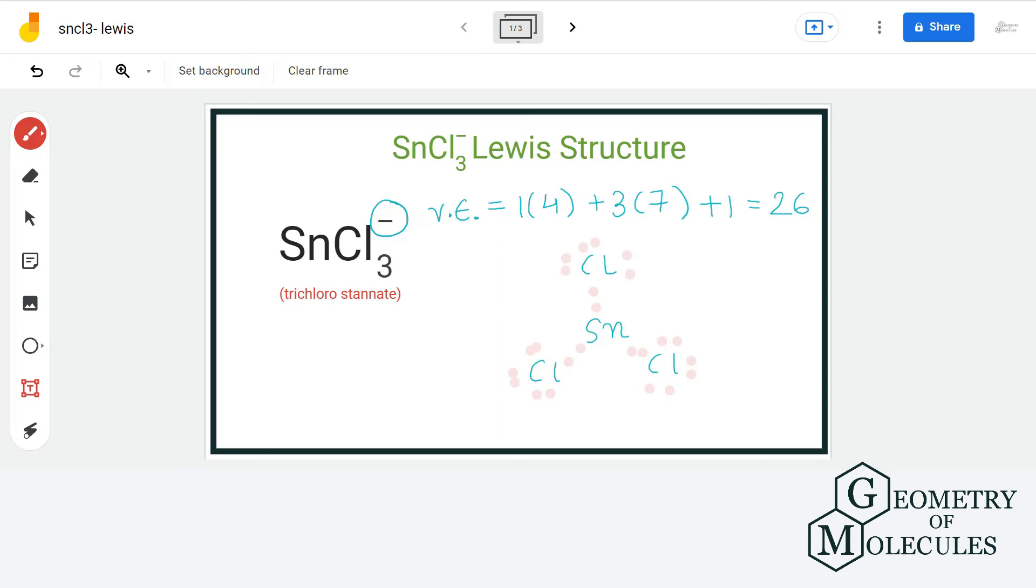Now the remaining 2 electrons that we have will be assigned to tin, as it still needs 2 more electrons for complete outer shell.